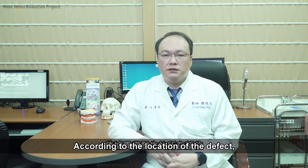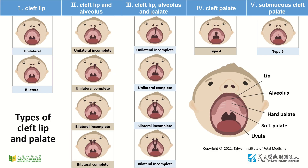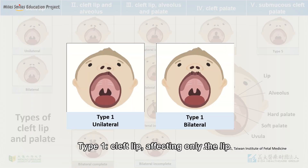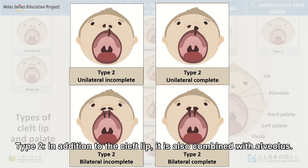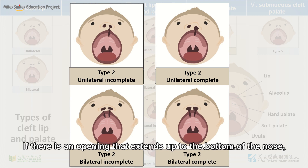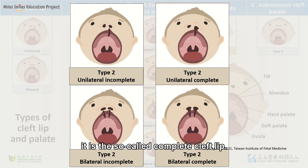According to the location of the defect, cleft lip and palate can be classified into five types. All cleft lip and palate can be unilateral or bilateral, and the forms on both sides may be asymmetrical. Type 1: cleft lip affecting only the lip. Type 2: in addition to the cleft lip, it is also combined with the alveolus. If there is an opening that extends up to the bottom of the nose, it is the so-called complete cleft lip.